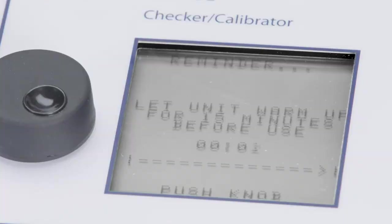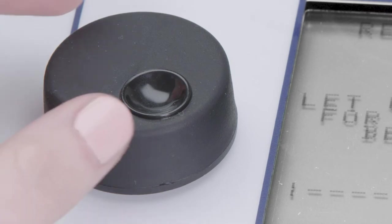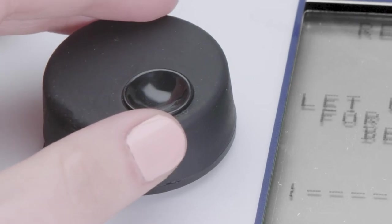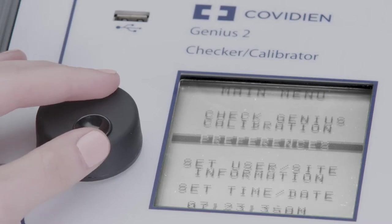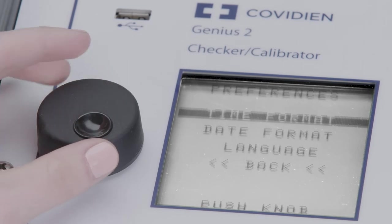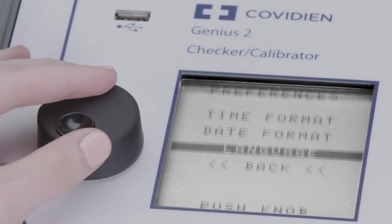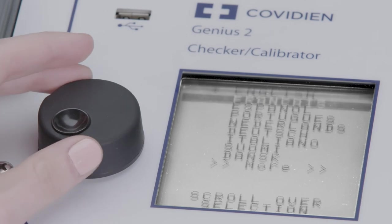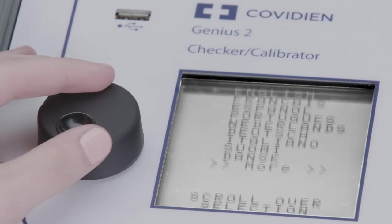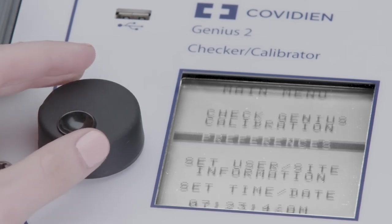The main control for the device is the encoder knob on the lower left side. Turn the knob to move through the menu options on the screen, and press the knob to select them. The default language for the device is English. If another language is needed, use the knob to select Preferences to change your language.